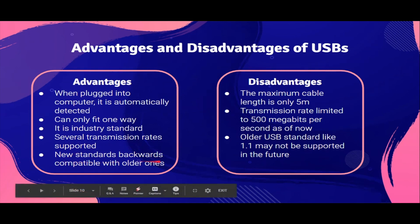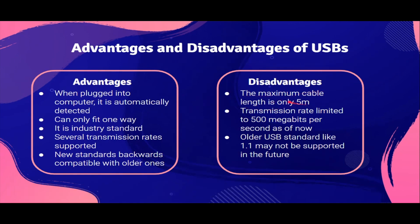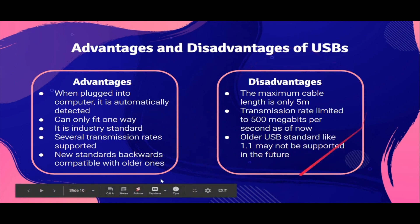The new USB standards are backwards compatible with the older ones. Now for disadvantages: the maximum cable length is only 5 meters. The transmission rate is limited to 500 megabits per second as of now. And the older standard, which is 1.1, may not be supported in the near future.